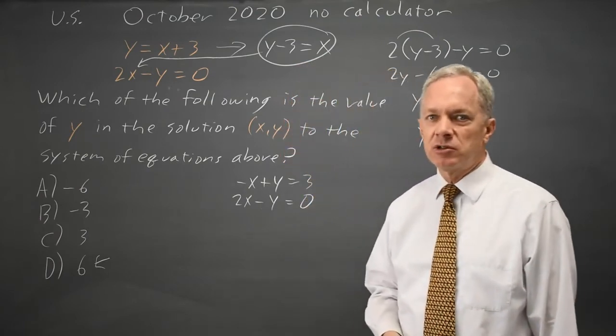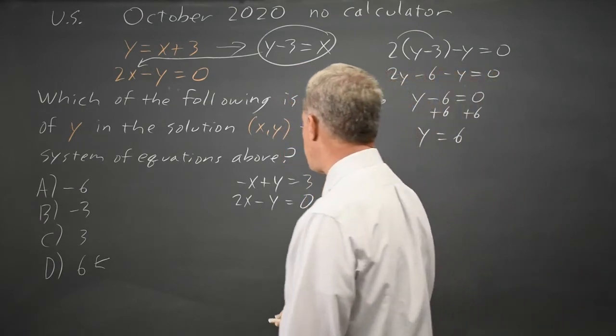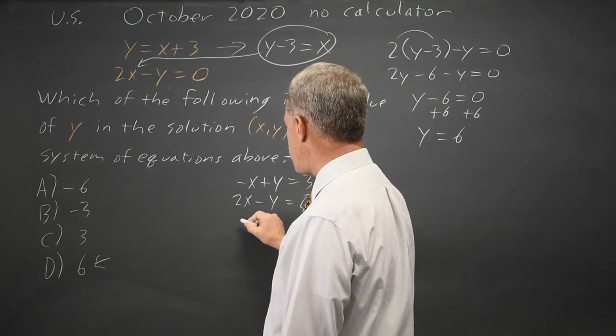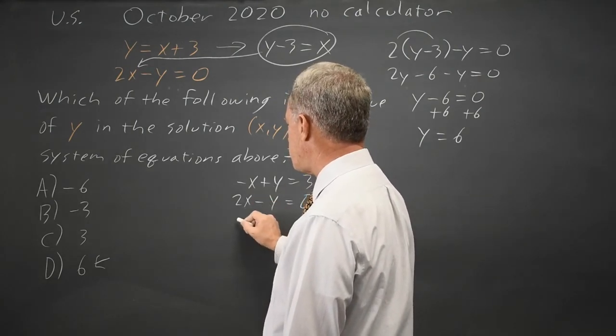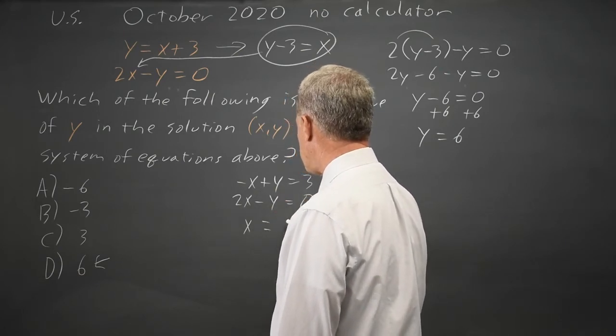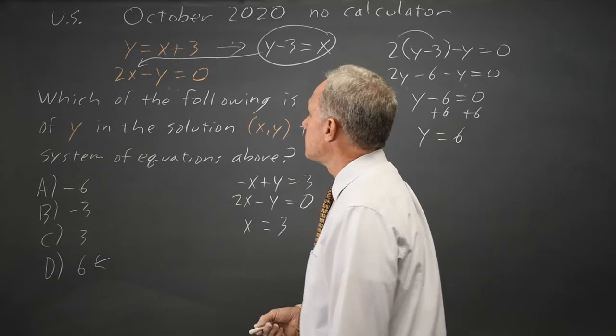If I add these two equations to each other, the y terms will cancel, which seems to be going the wrong direction, but let's do it anyways. Negative x plus 2x is x, y minus y is 0, 3 plus 0 is 3, so x equals 3.